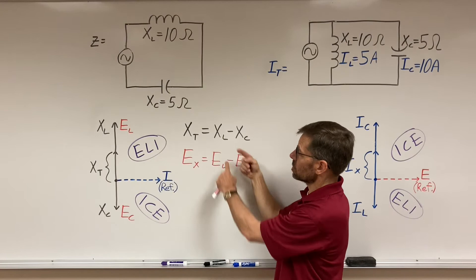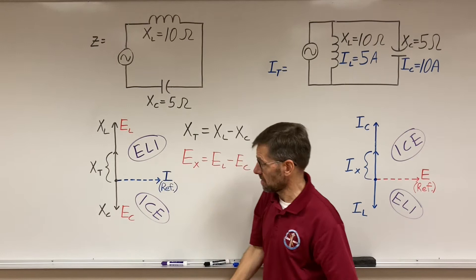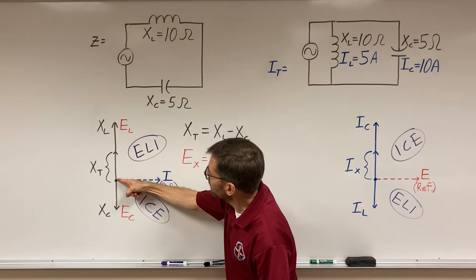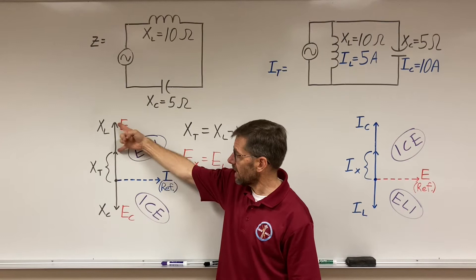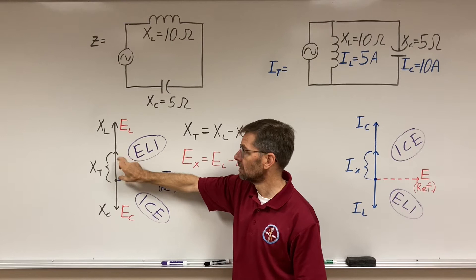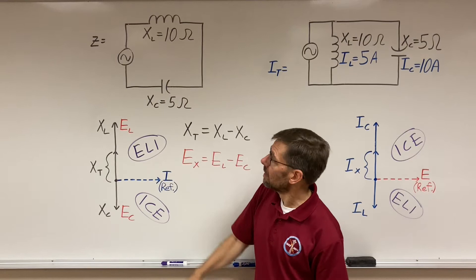Now, had the capacitor had the larger number, I would have flipped these two, because I'm just looking for how much difference between them. What's the difference in length of the vectors? And the way that makes a difference to me here is that here, the inductive vector is longer, so I take the little capacitive vector, take it away from here, and I'm left with a total reactance of this amount.